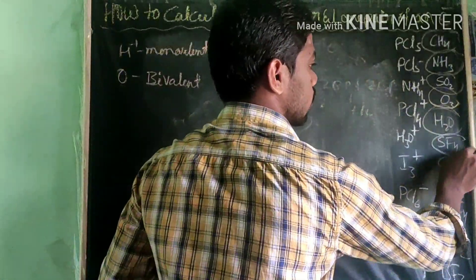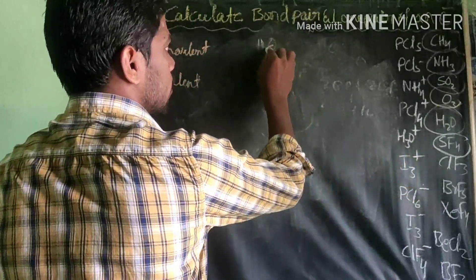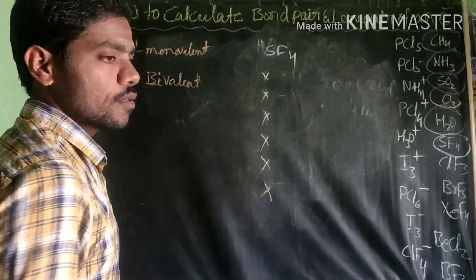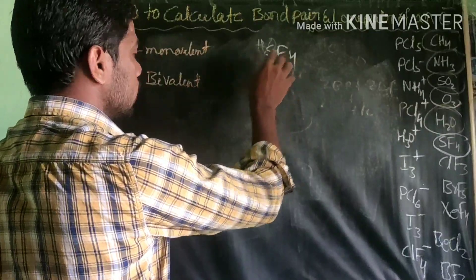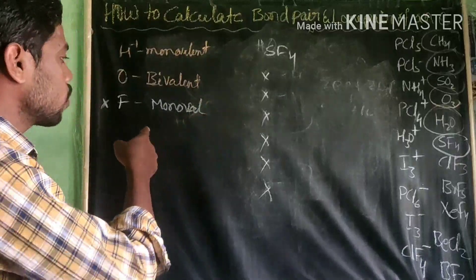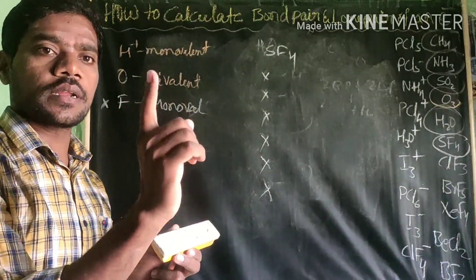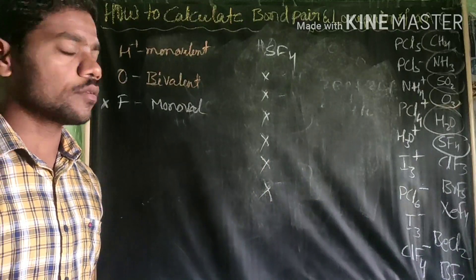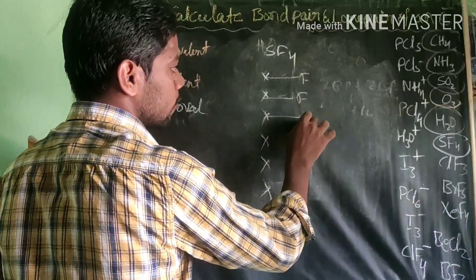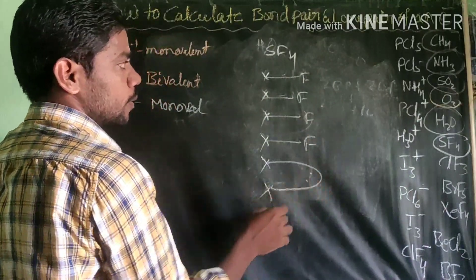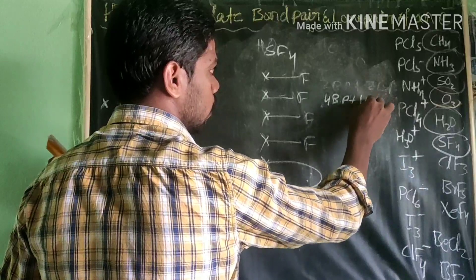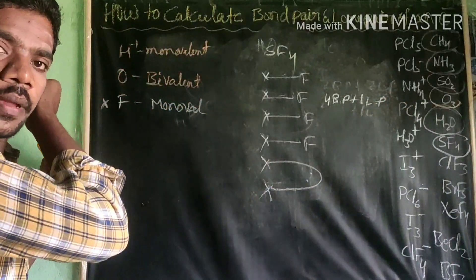Next, SF4 — sulfur tetrafluoride. Sulfur has 6 outermost electrons. Fluorine and all halogens are monovalent — they need only 1 more electron to attain the octet. So 4 fluorine atoms form 4 bonds, using 4 of sulfur's electrons, leaving 2 electrons as 1 lone pair. SF4 has 4 bond pairs and 1 lone pair.